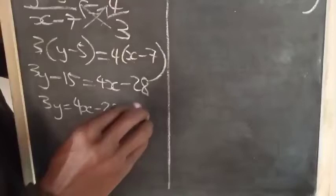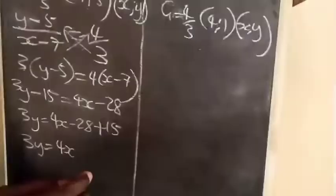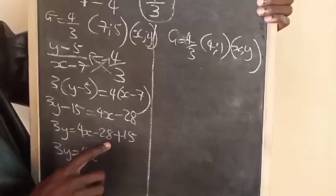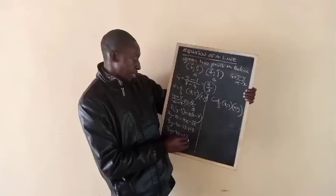We get 3y equals 4x minus 28 plus 15. 3y equals 4x minus 28 plus 15. Now, minus 28 plus 15,